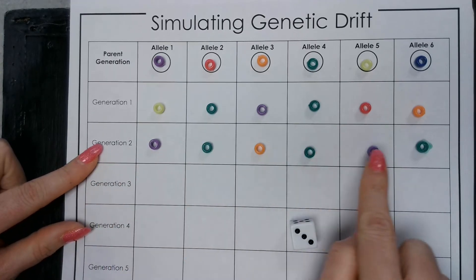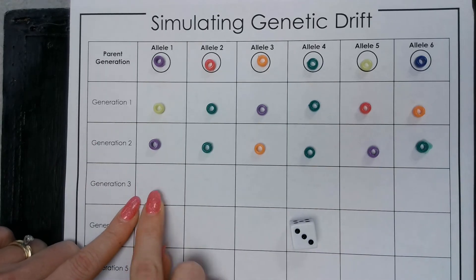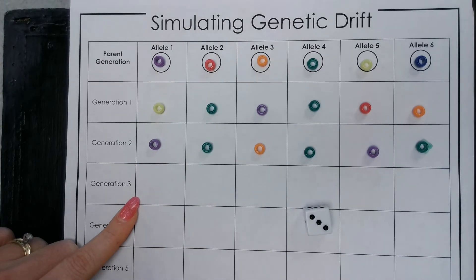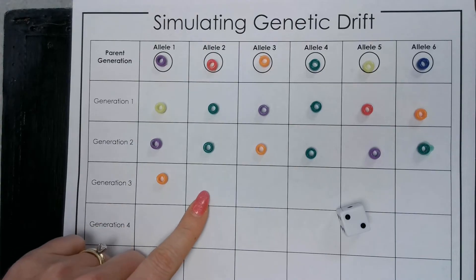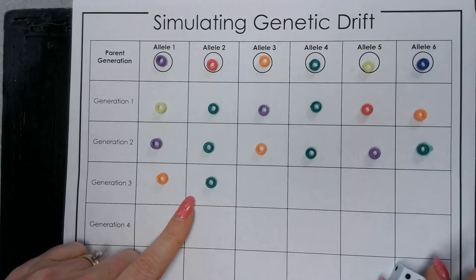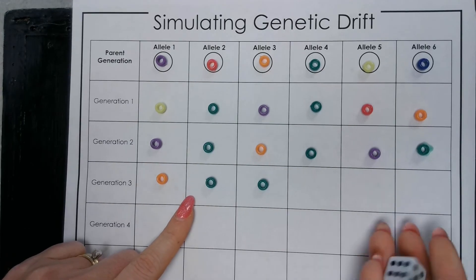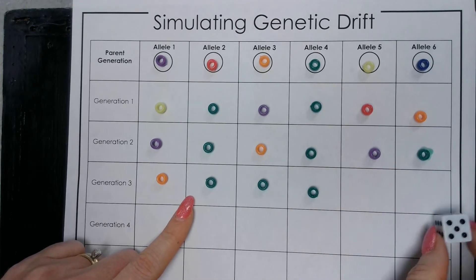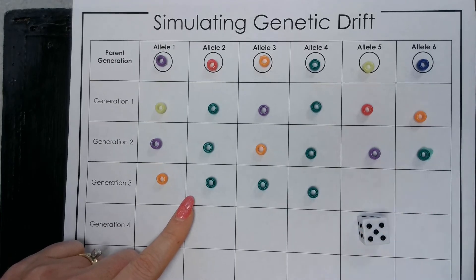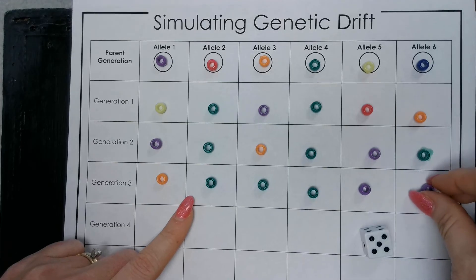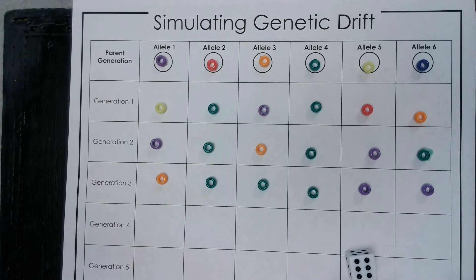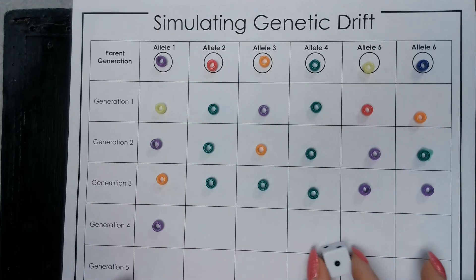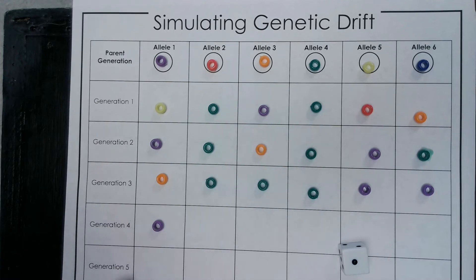Let's keep going. Using generation two as our model to figure out the alleles for generation three: a three — allele three is an orange bead. Allele two is a green bead. Allele four is a green bead. Another four. We're starting to see how certain alleles become more prominent in the population, more frequent over time. Allele five is going to be a purple bead. We have a six — that's also a purple bead. You're going to want to pause the video and fill out your table after each generation.